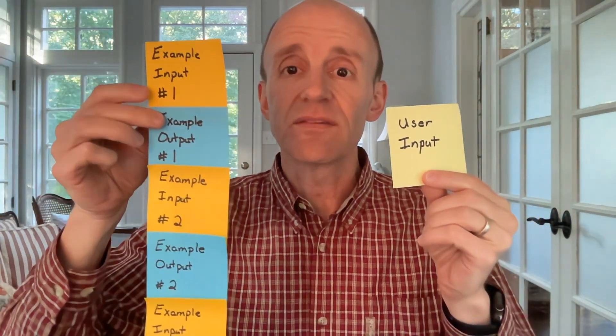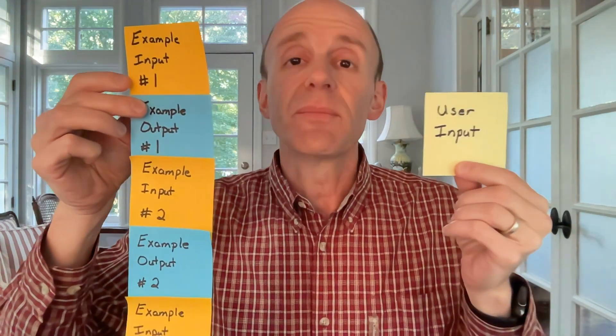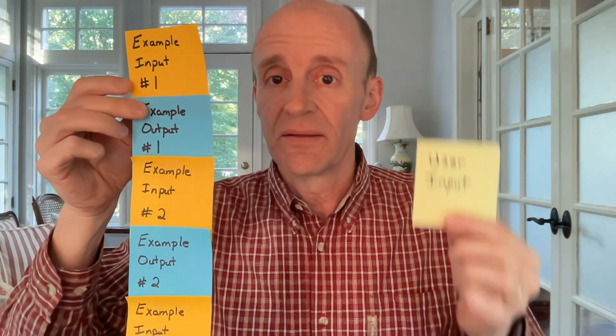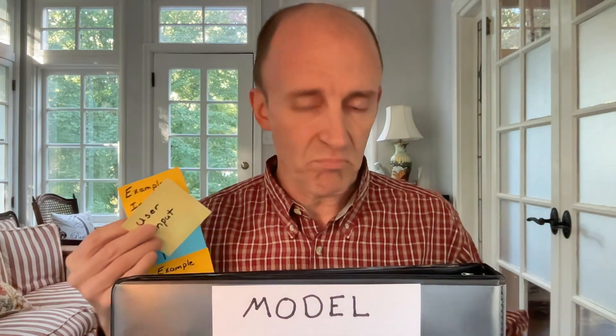To explain how prompt tuning works, let's start with a form of prompt engineering called few-shot learning. In few-shot learning, when a user provides their input, we pre-pend that with a list of examples for that particular task — maybe sentiment analysis or summarization — and we feed all of that into our model to get an output that is okay.